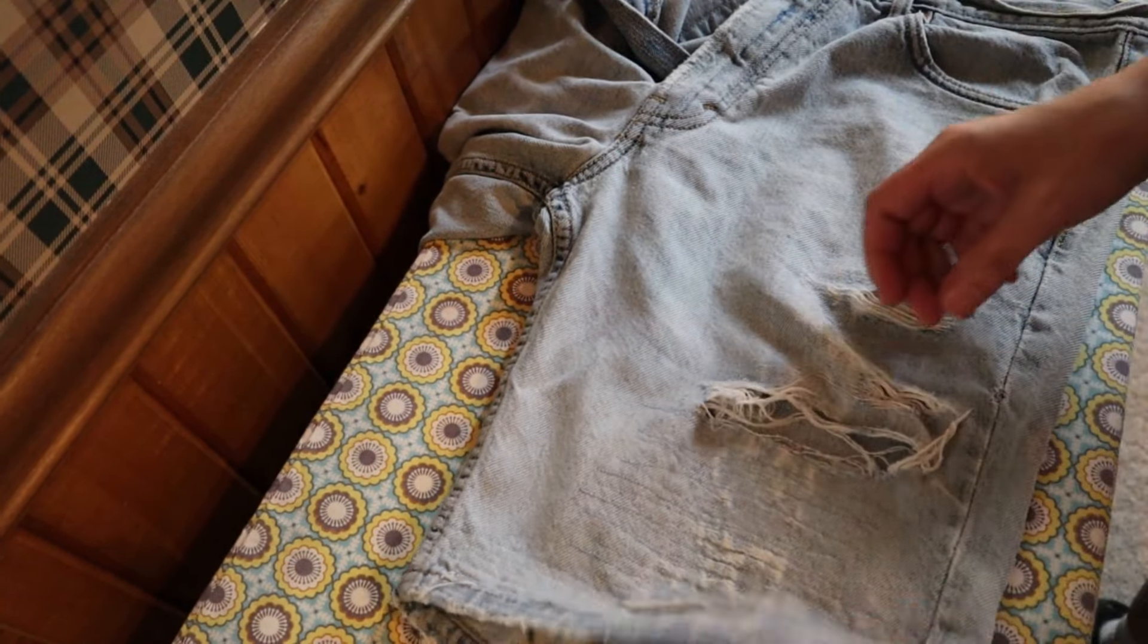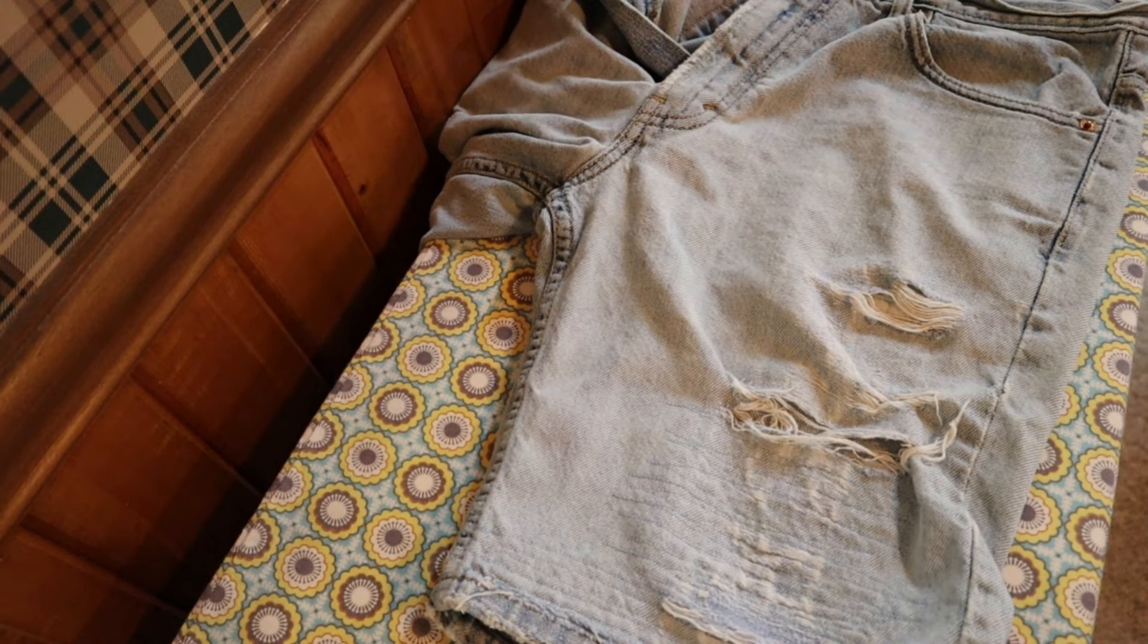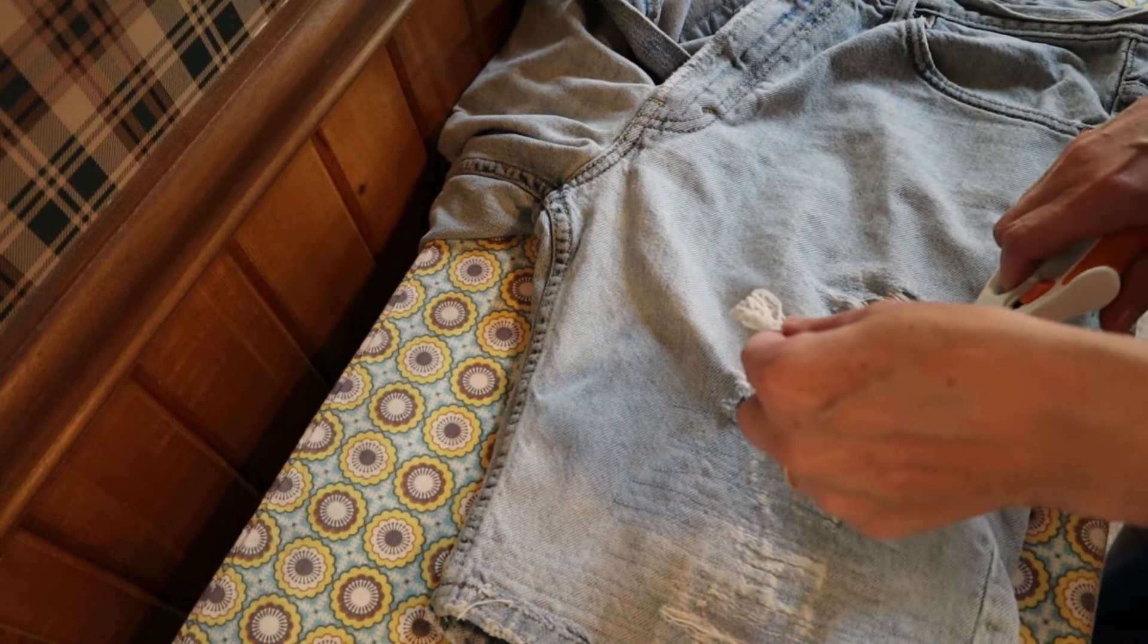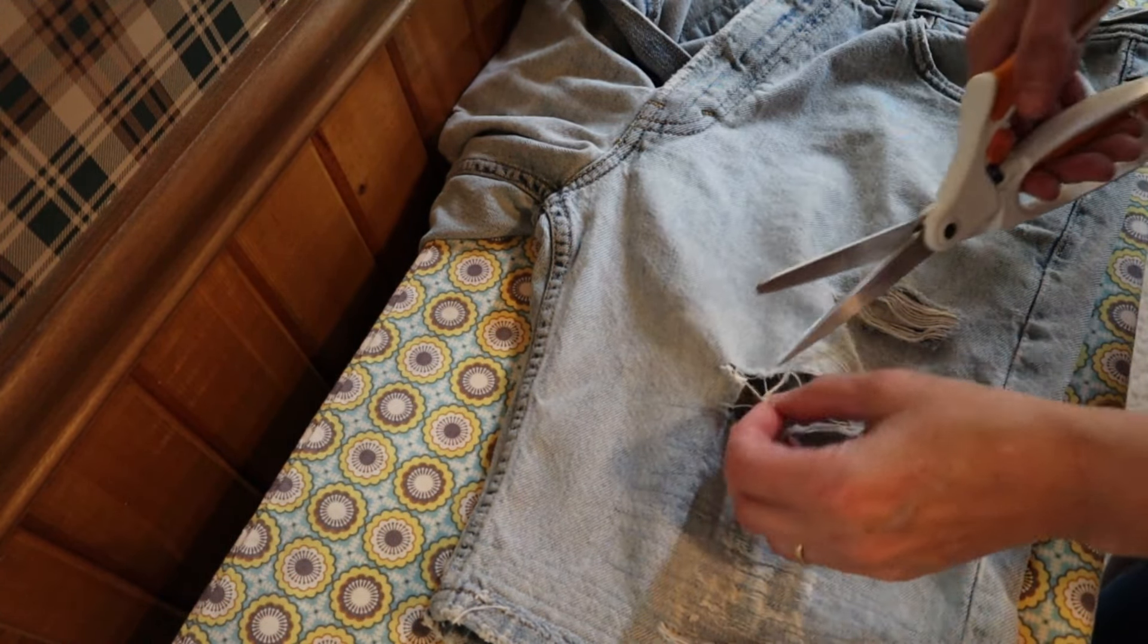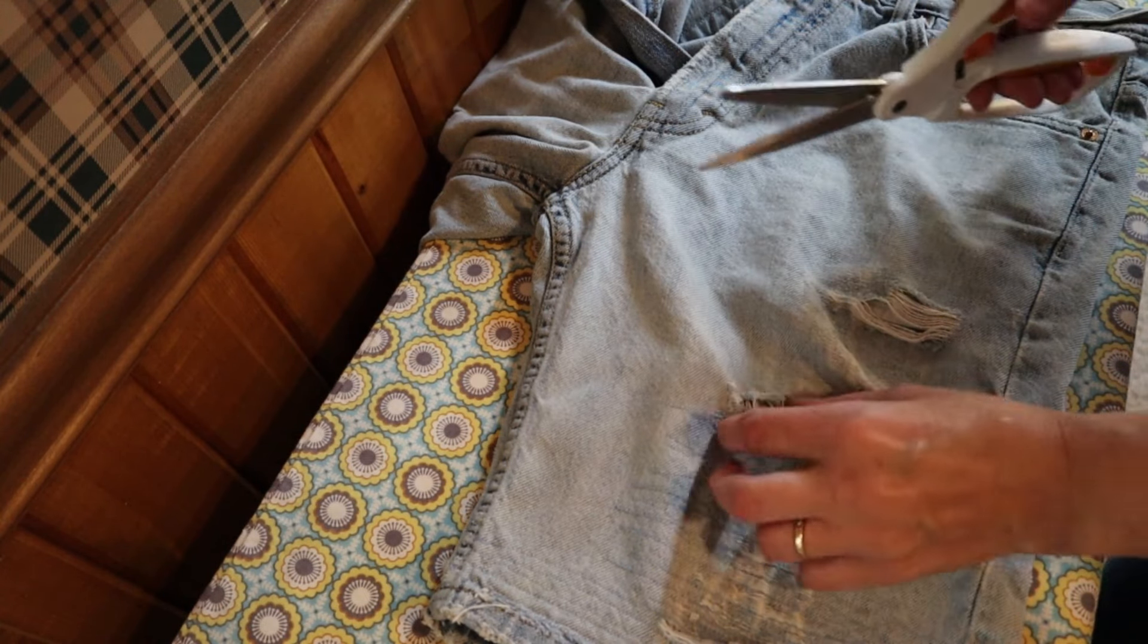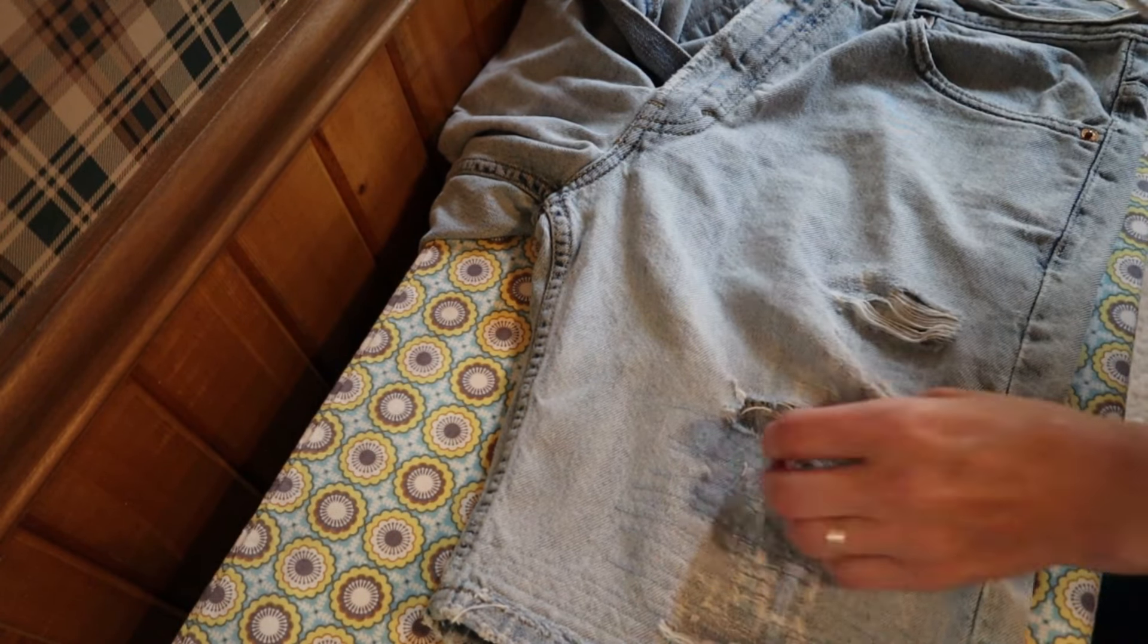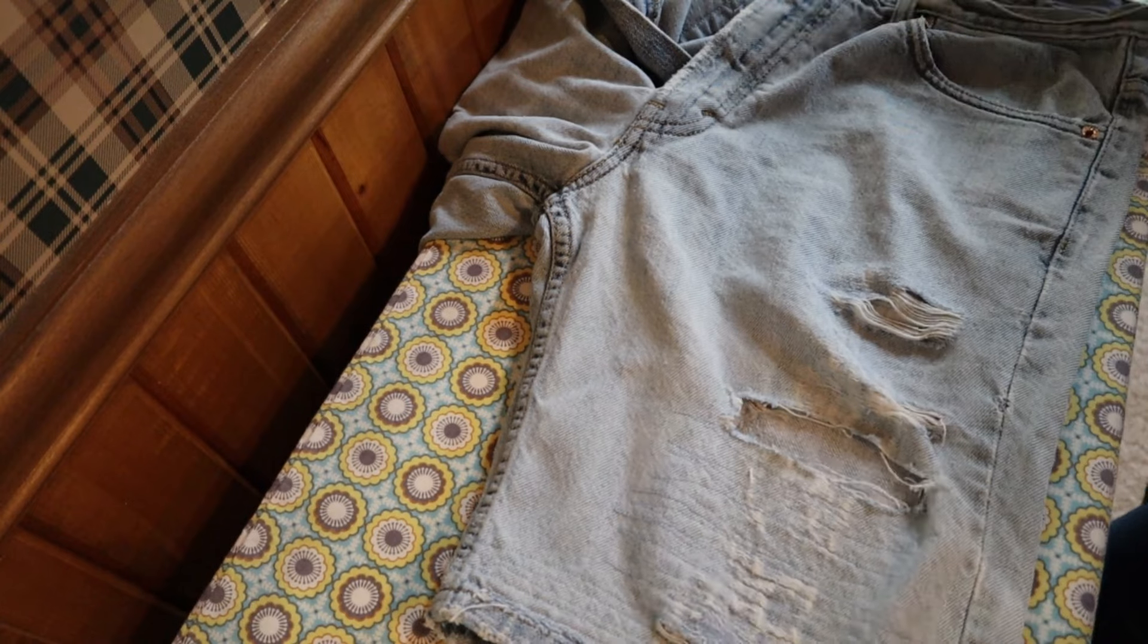Start by taking some of the strings that are on the pants. The ones that seem like they're still attached or really long, and we're just going to snip them off. Don't snip off any of the denim if you can help it. You want to lose as little as possible of the actual jeans.